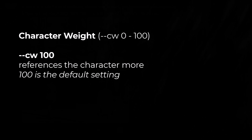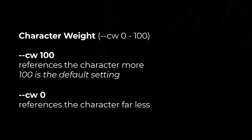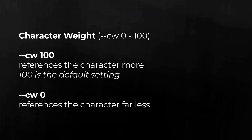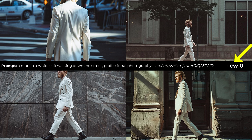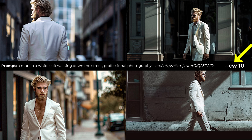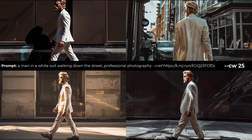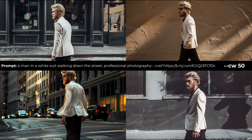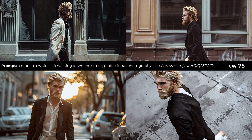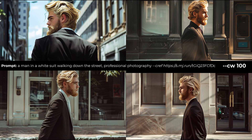Character weight goes from a range of zero to 100 — I look at it as percentages. A character weight of 100 means 100% of the character, including the suit and everything in the reference image. A character weight of zero references as little as possible — only the face and a few features — giving you more freedom with that image. As you cycle from zero up to 100, the suit and character features blend more towards that original image, giving you more flexibility.